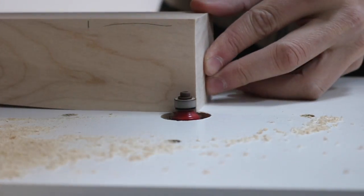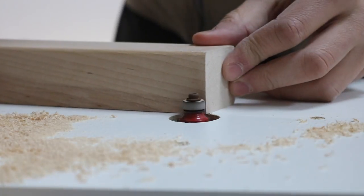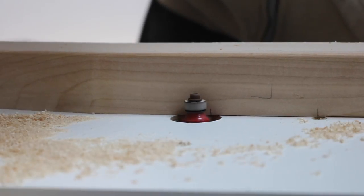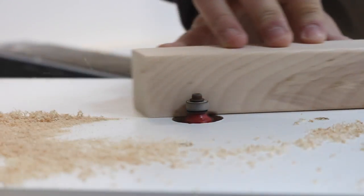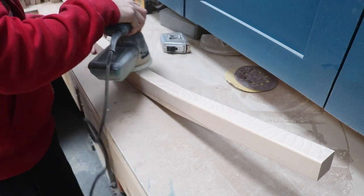When marking the legs, make sure to label the left and right sides. Once all the roundovers were applied, I sanded everything again with 220 grit for a nice smooth finish before everything gets assembled.